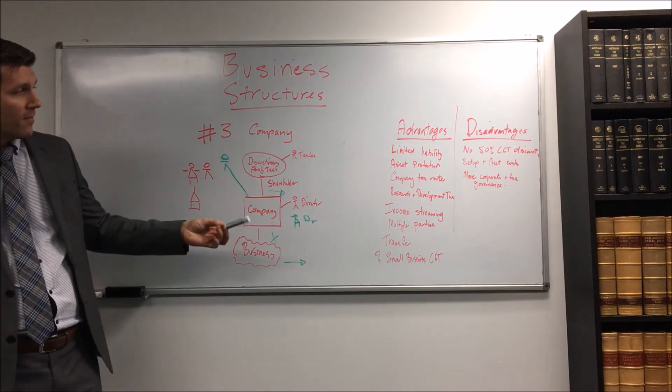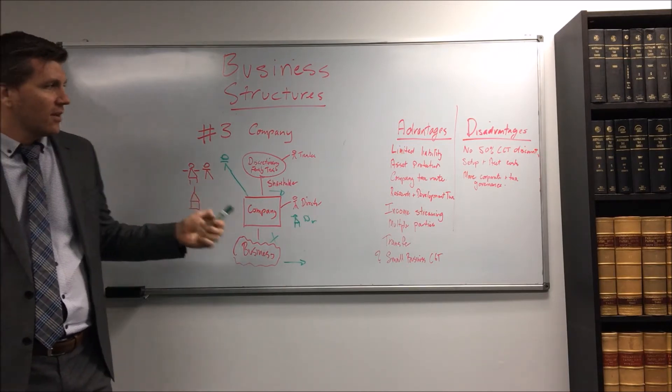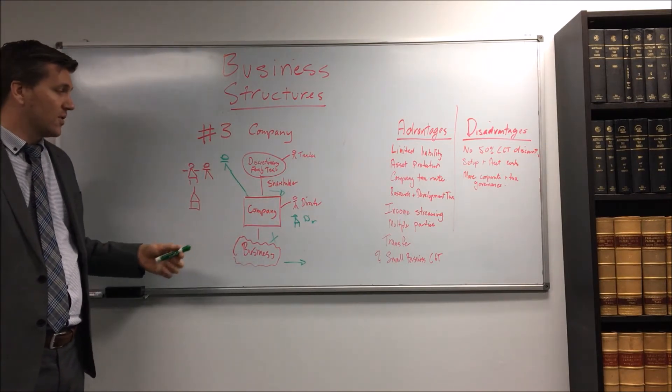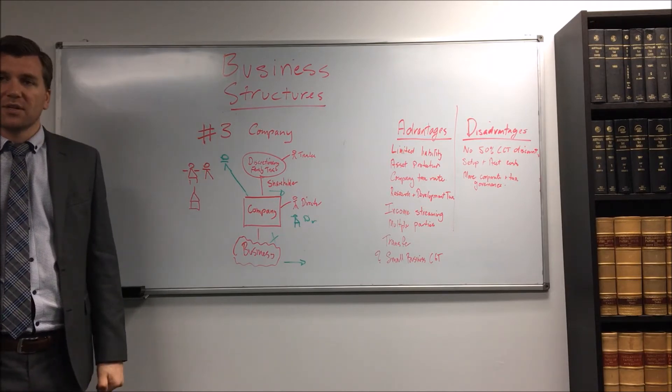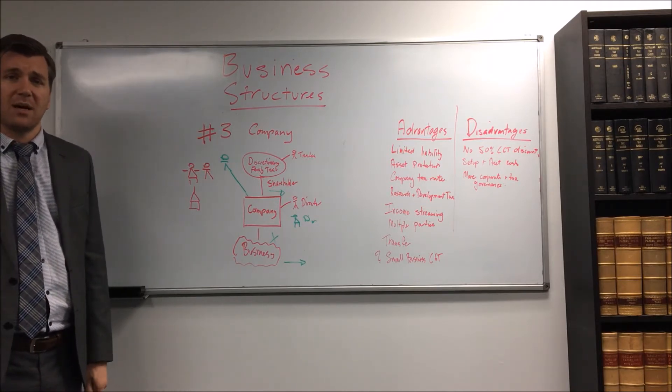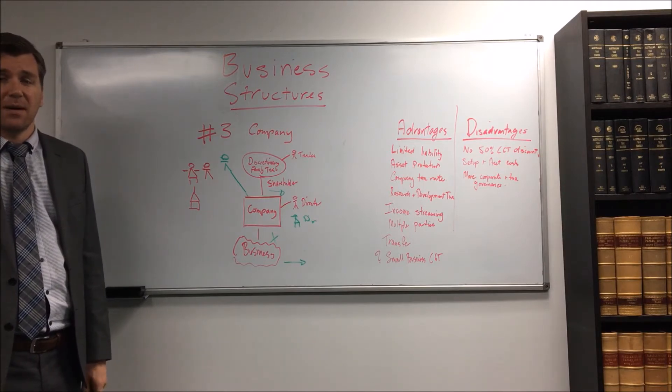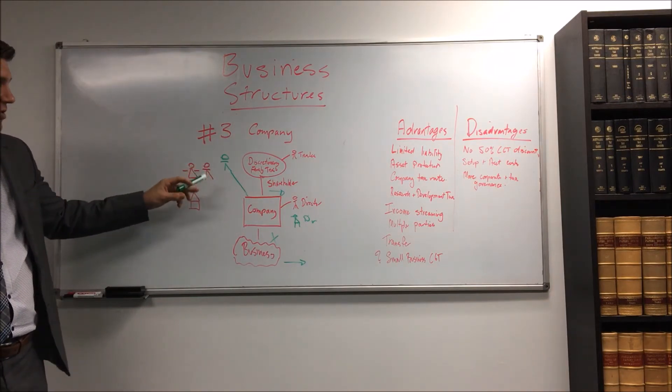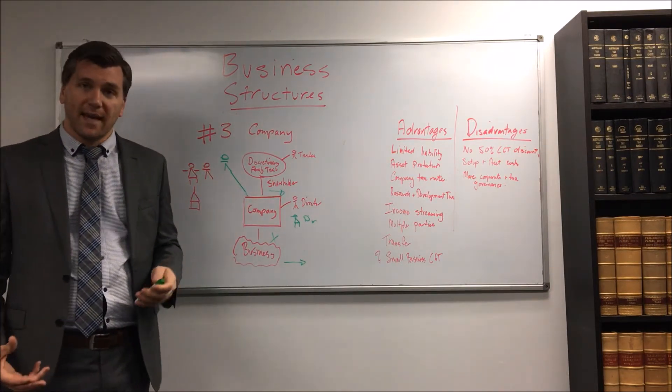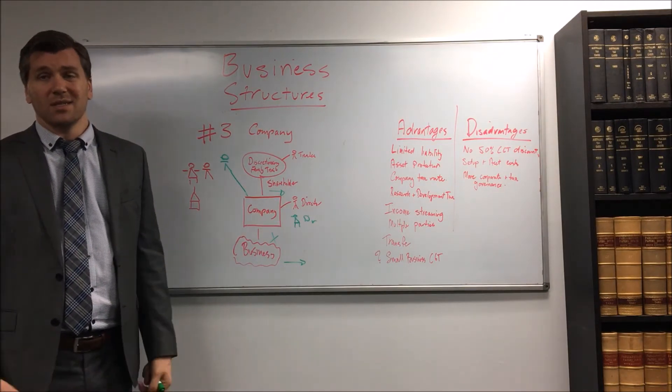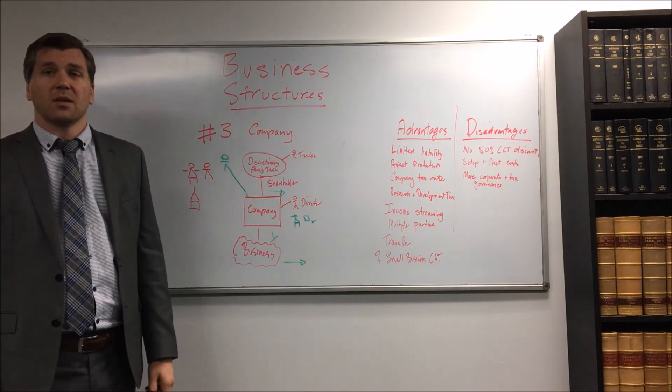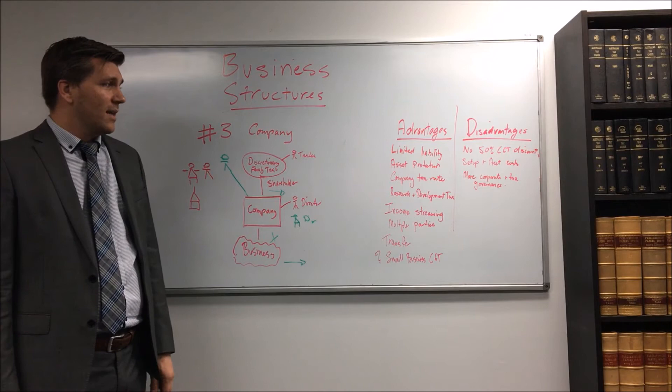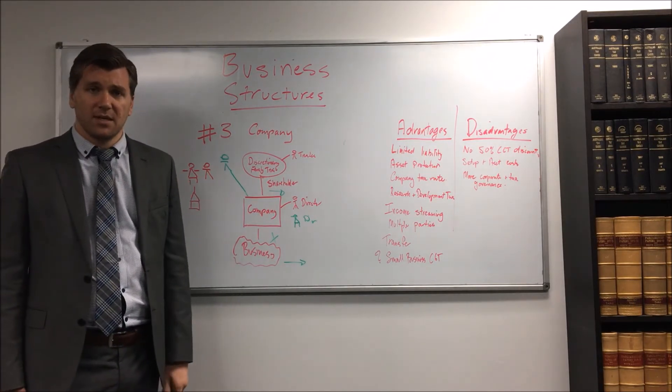Now disadvantages, there are some setup and accounting costs. You know you're going to have to pay about 460 odd dollars for an ASIC fee plus whatever it costs to incorporate it. You know maybe it's going to cost you a thousand bucks all up or we do these online for around 150 bucks plus your ASIC fee. You're going to need to pay for your family trust. There is more accounting costs, it's not huge if you're running a business, it's not going to be a big deal, but if you go compared to a sole trader it's a little bit more complex.